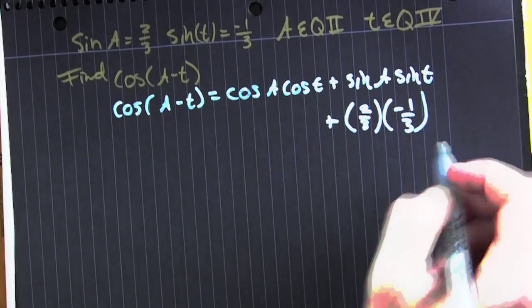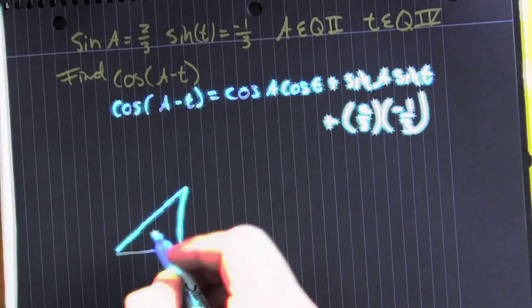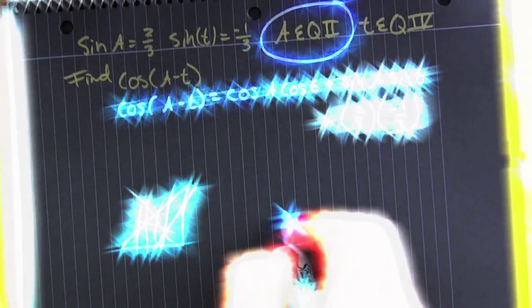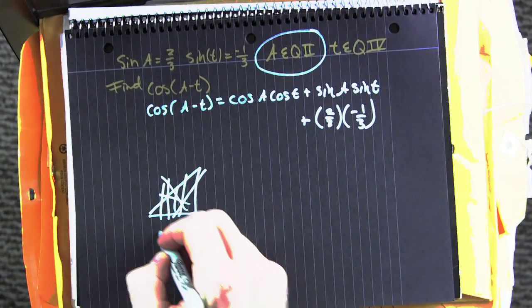We're going to have to go get the other ones, so draw a triangle. Oh, scratch that out. If your triangle's in quadrant 2, draw your triangle so it looks like it's in quadrant 2.